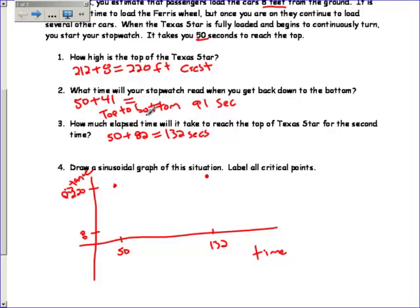And when were we at the bottom? See how these questions are helping me with my graph? We were at the bottom, 91 seconds. And you can see that this is halfway between those two peaks. 50 plus 41 is 91. 91 plus 41 is 132.